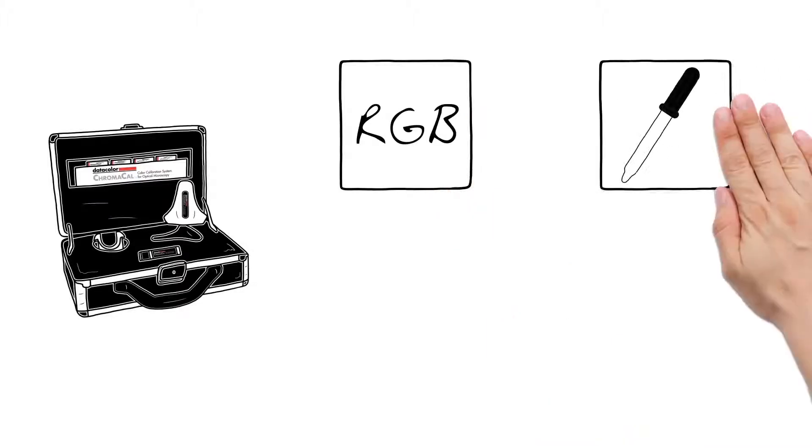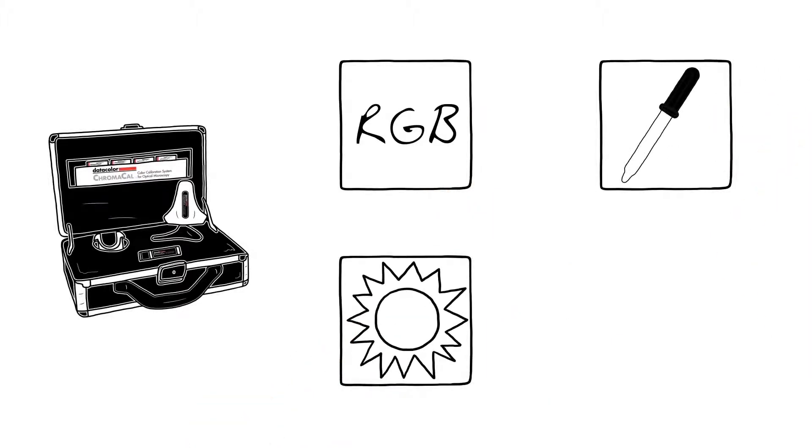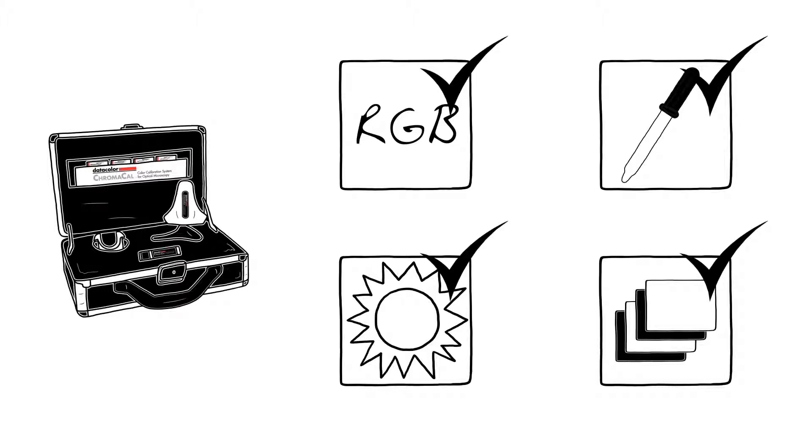For your images, ChromaCal colour calibrates, auto-white balances and matches brightness. All done in a simple batch process, to deliver report and publication quality images the first time, all the time.